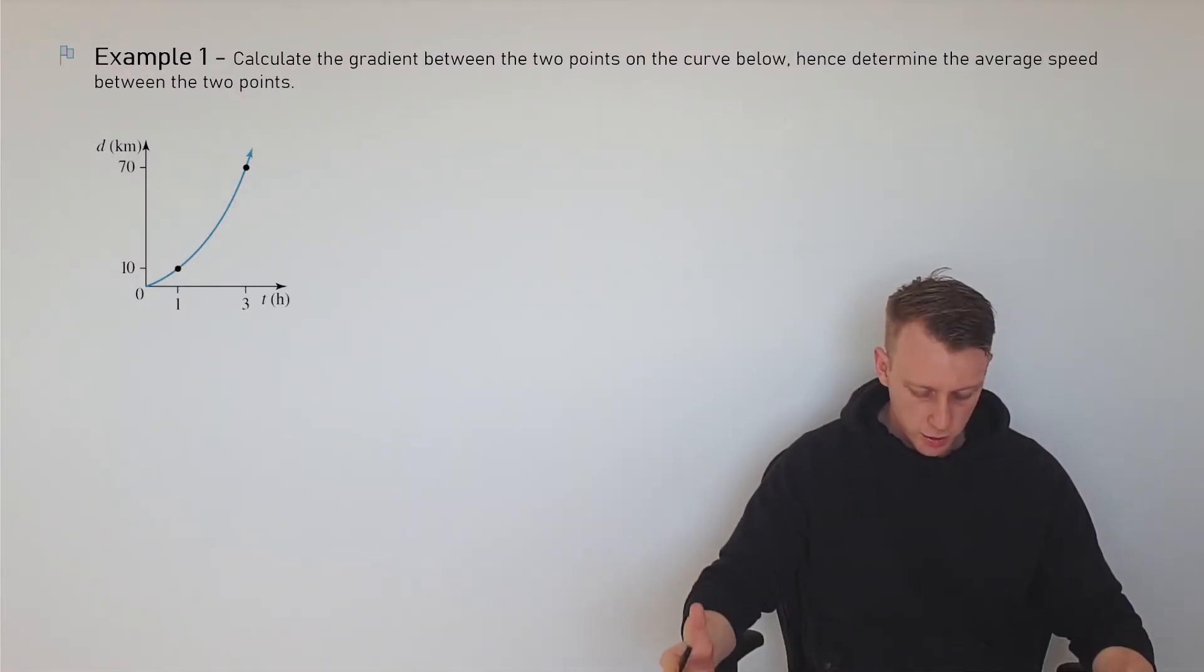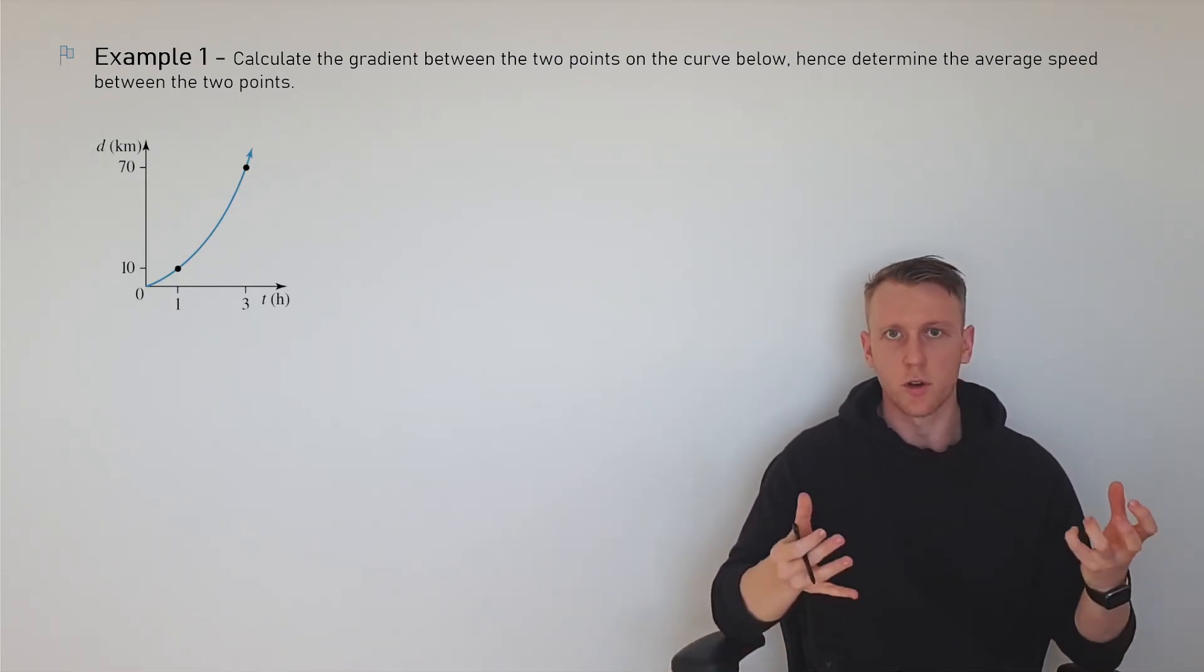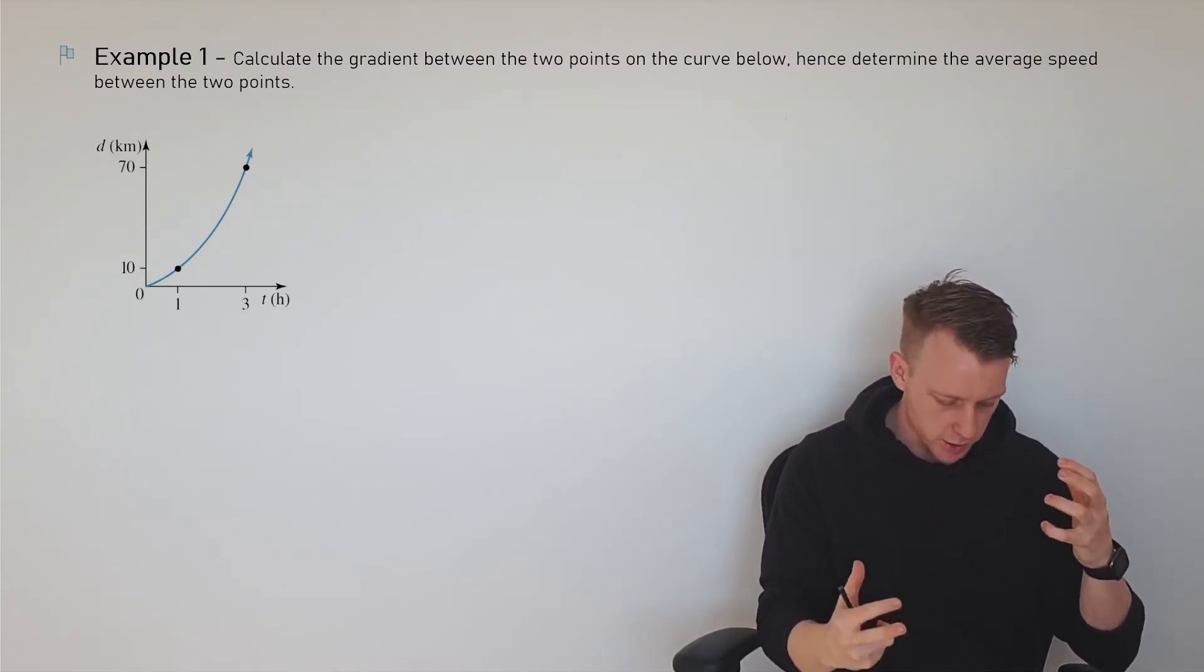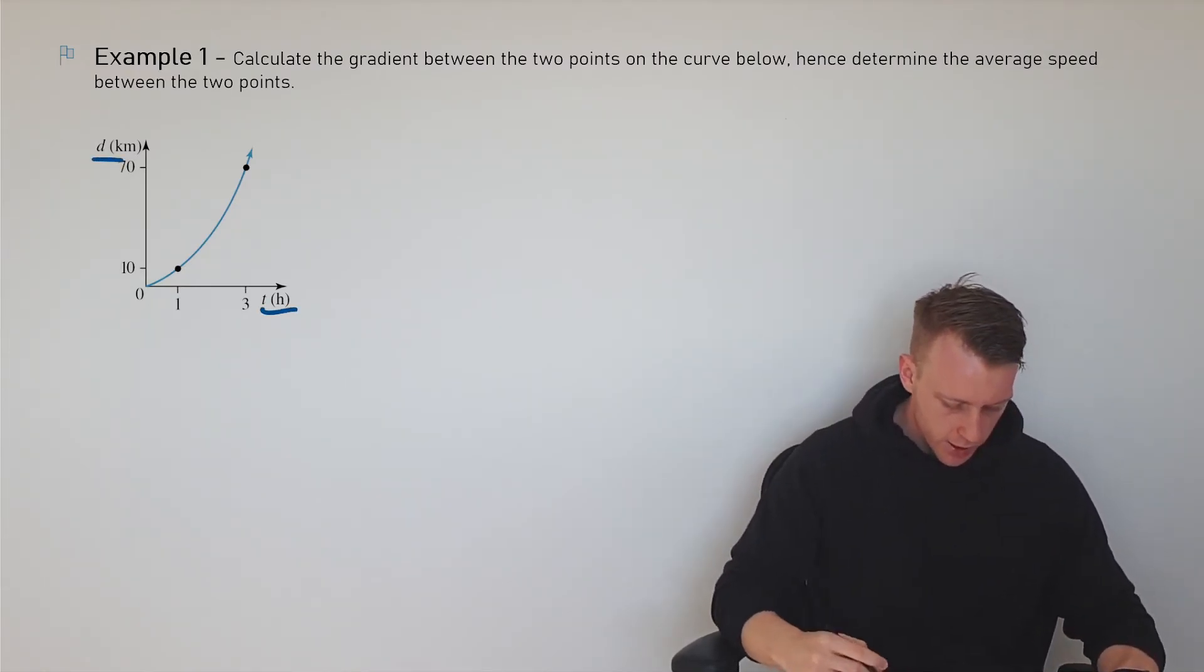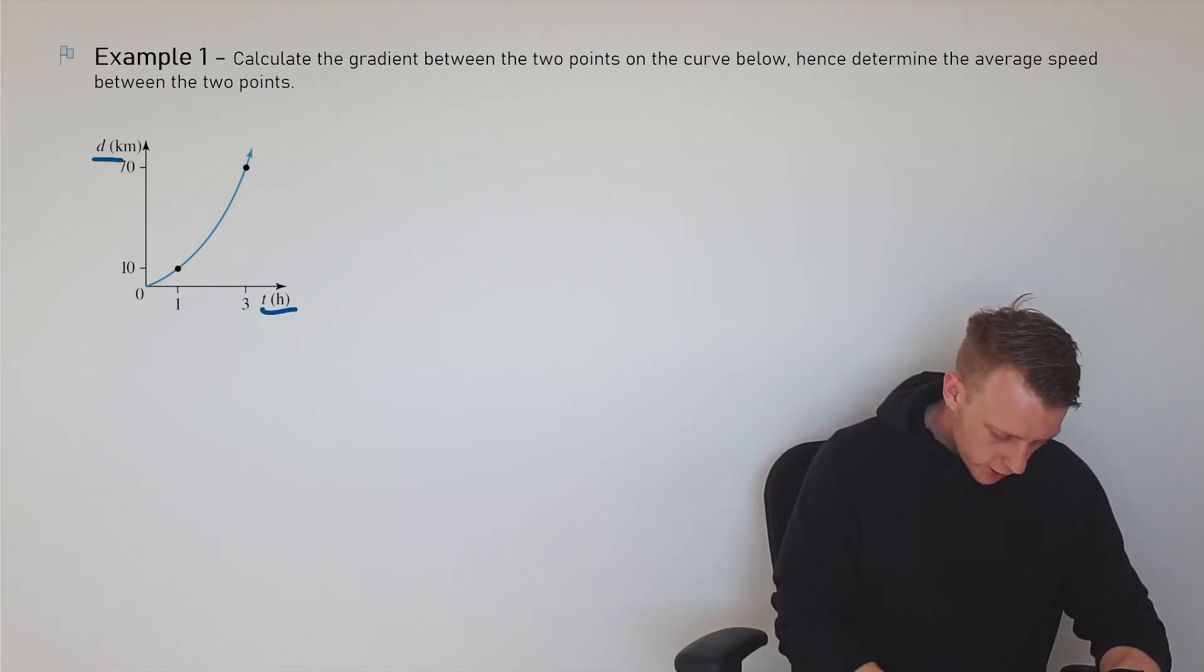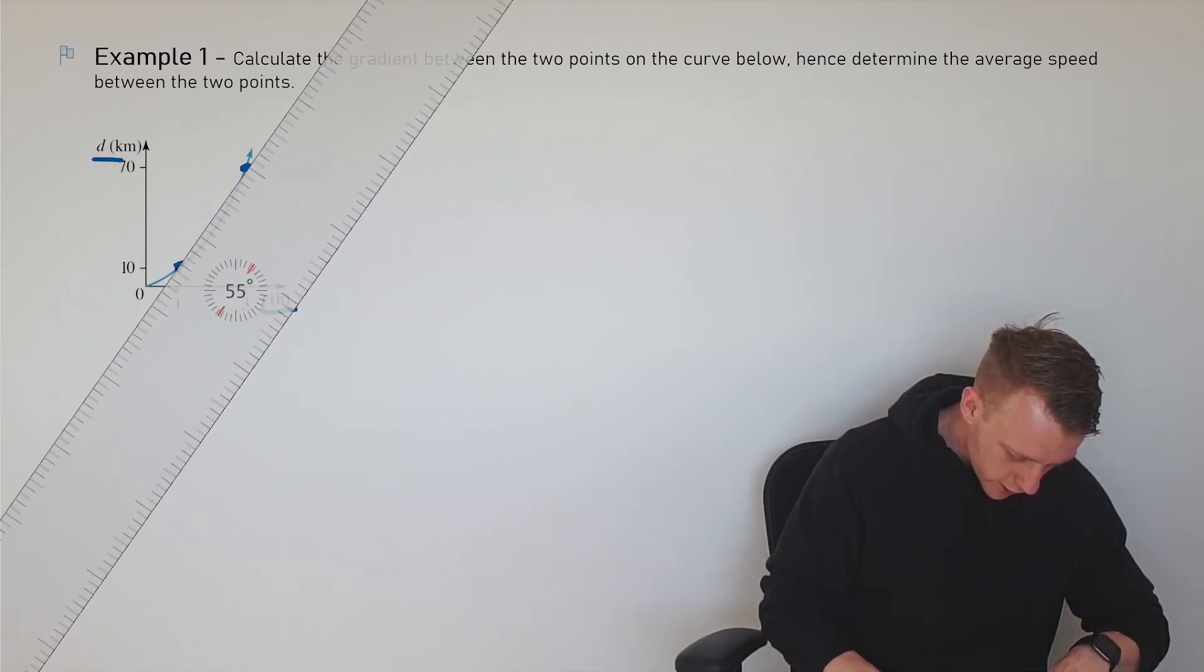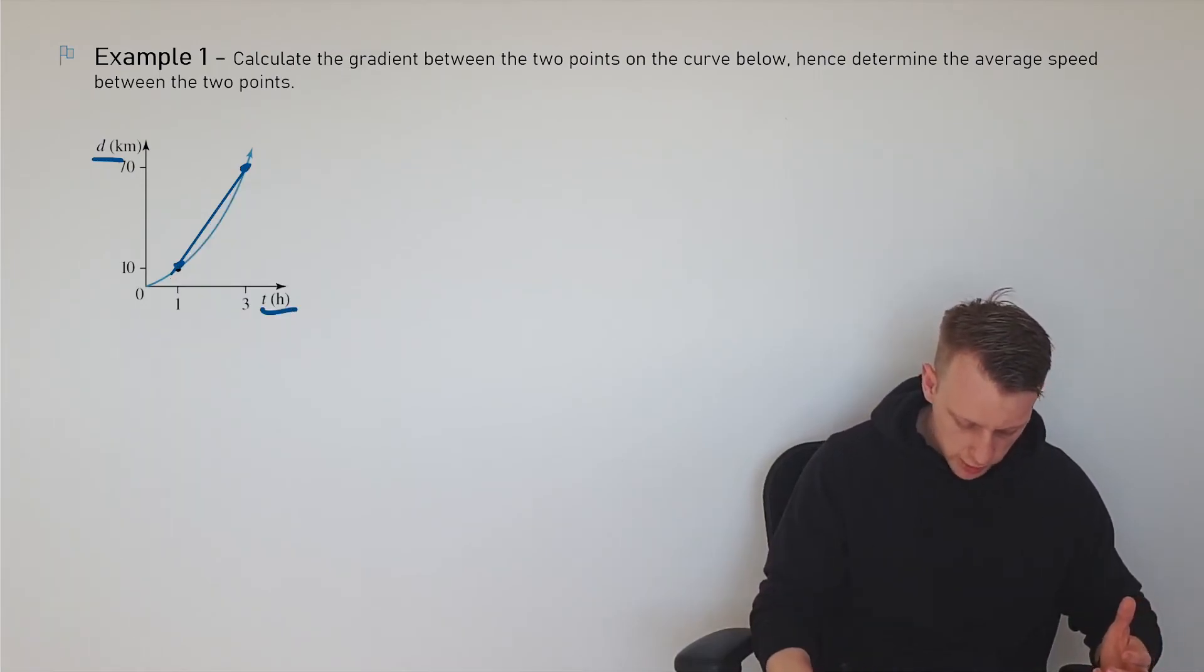Here it's saying calculate the gradient between two points on the curve, hence determine the average speed. Hopefully we're seeing that it's the gradient that's going to tell you how two things are changing. Here's distance, here's time. The gradient between these two points, you can link them up. It's like just doing rise over run: y2 minus y1 over x2 minus x1. You can draw the gradient line if you wish.